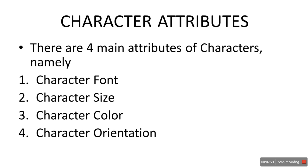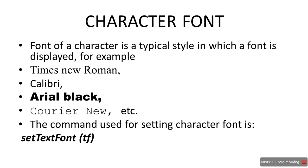Now character attributes — these define how characters or letters look. There are four main attributes: character font, character size, character color, and character orientation. You've seen these in Microsoft Paint and Microsoft Word. Character font is the typical style in which text is displayed — for example, Times New Roman, Calibri, or Courier New. The command to set character font is set text font, providing TF (text font) in brackets.